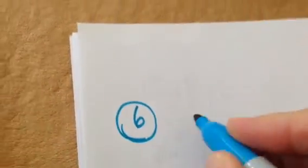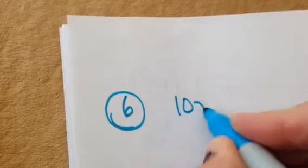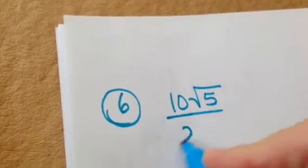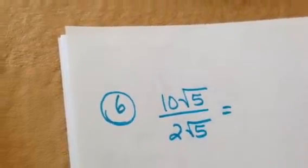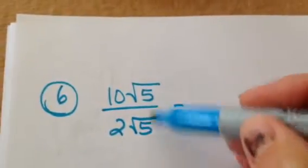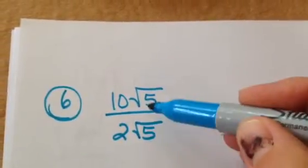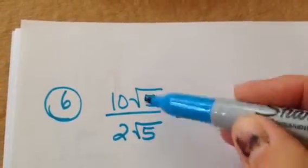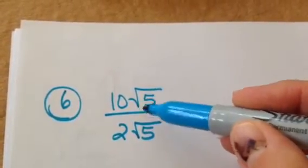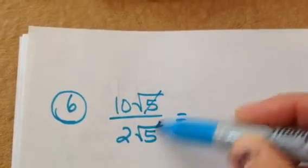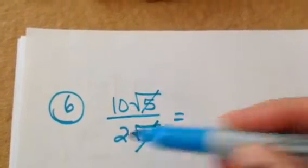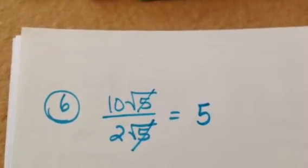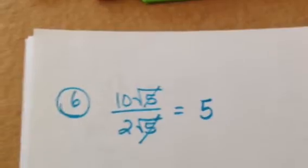Look at number 6 from 4a: 10 square roots of 5 over 2 square roots of 5. Don't make this difficult. The square root of 5 over the square root of 5 is just 1 — they cancel. And 10 over 2 is just 5. So the answer is 5.